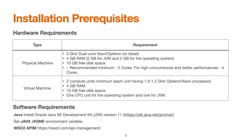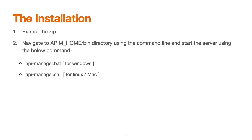Once you have downloaded the binary pack — which is typically a zip file — you extract it. The extracted root directory is referred to as the API Home or API Manager home directory. Navigate inside the bin directory using the command line and start the server using api-manager.bat for Windows or api-manager.sh for Linux and Mac. Note that with API Manager 4, the startup script name has changed from the previous wso2carbon.sh or wso2carbon.bat.